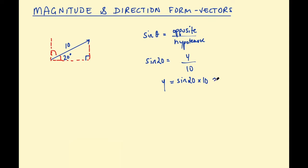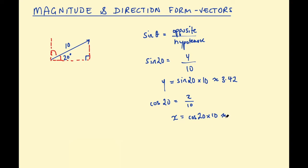Rounding that off, y is approximately 3.42 to two decimal places. To find the horizontal distance we use the cosine ratio: cosine 20 = adjacent / hypotenuse = x / 10. Rearranging, x = cosine(20°) × 10, which gives approximately 9.40 to two decimal places. So these two distances are 3.42 and 9.40.